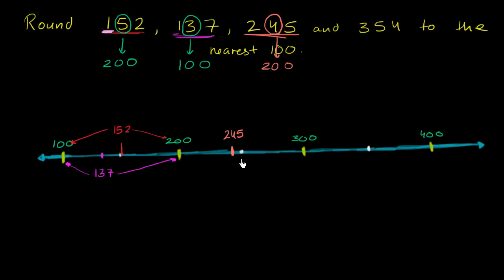We had two options: if we rounded up we would go to 300, if we rounded down we would go to 200. We're clearly closer to 200. And we can verify that with the rule — the tens place here is a 4, so we round down.